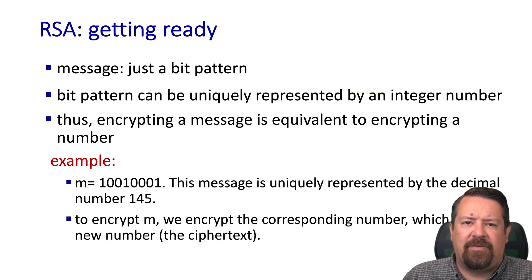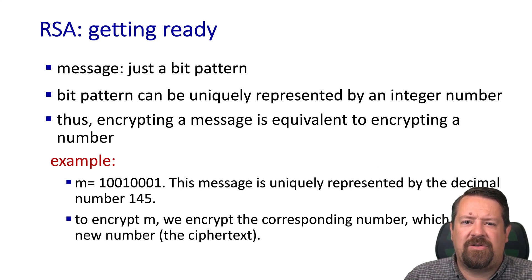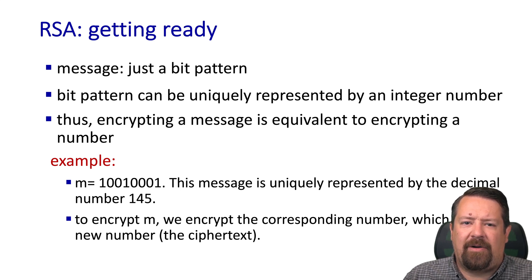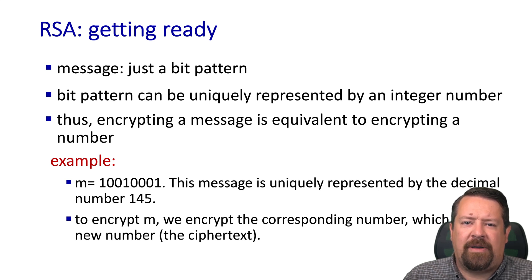From RSA's perspective, the message is just a bit pattern. These messages are any sequence of bits that needs to be encrypted — any bit pattern can be uniquely represented by an integer number, so encrypting a message is equivalent to encrypting a number, regardless of whether those bits represent letters or binary data. We have our bit pattern m, which can also be represented by the decimal number 145. To encrypt m, we encrypt the corresponding number, giving us the ciphertext — essentially we encrypt a byte sequence and get a new byte sequence.